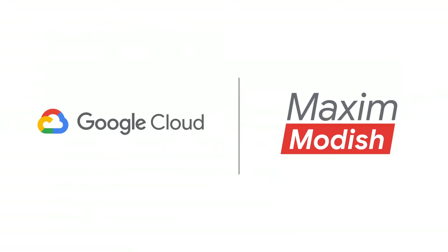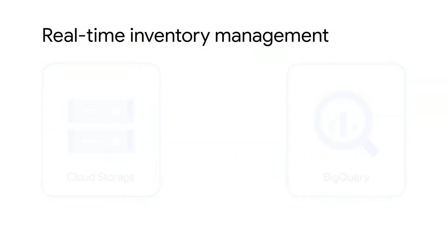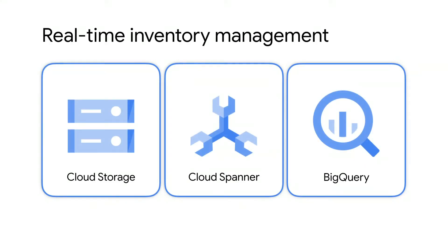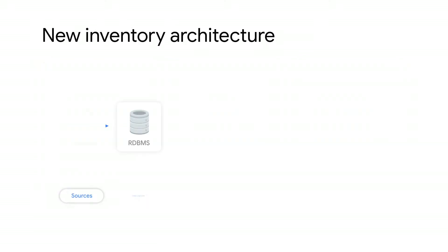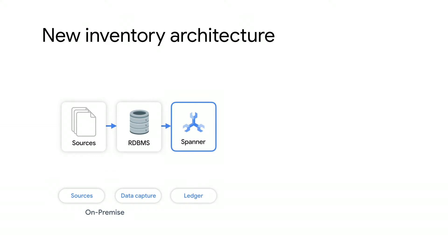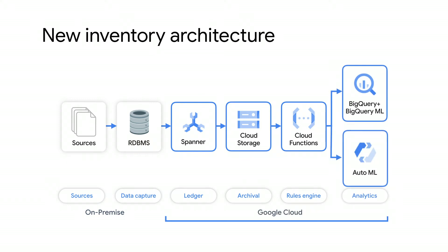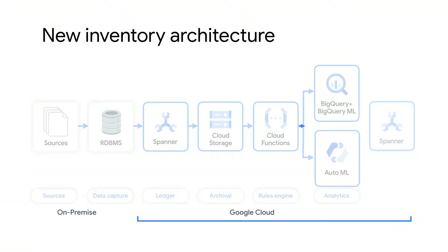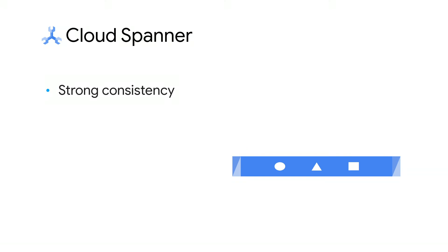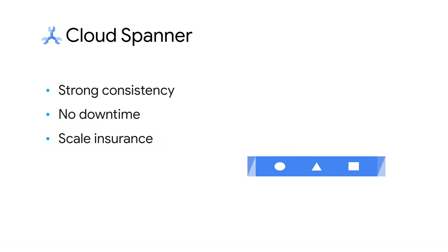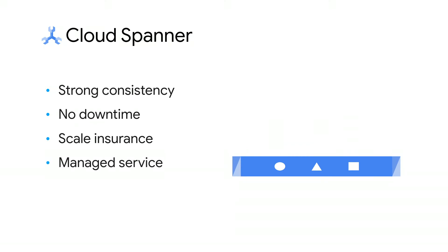This is where Google Cloud helped turn things around. Through their partnership, Maxim Modish was able to build an inventory ledger solution with Google Cloud Spanner at its core. This inventory ledger solution is modeled based on retail environments represented as a series of events — things like items shipped to a store, item price updates, or customer purchase requests. They chose Spanner to house their inventory event ledger, which would keep track of the constant changes to inventory. Cloud Spanner is a managed database with strong consistency in regional and multi-regional setups, no downtime, and scale assurance. It combines the best of relational semantics and scale, and being a managed service, it frees Maxim Modish from the operational overhead of their own large-scale inventory systems.